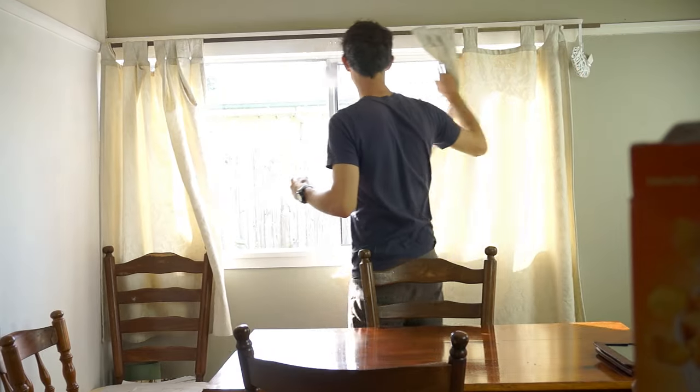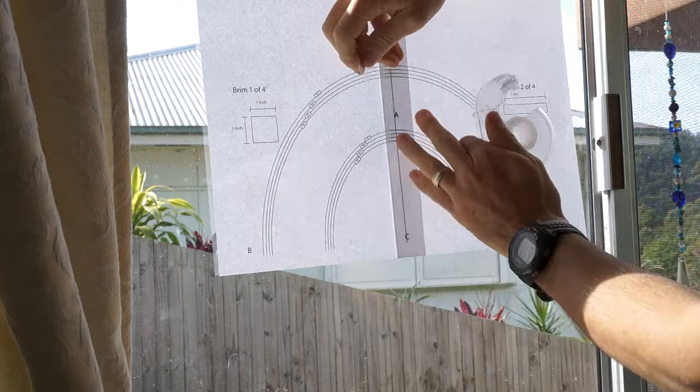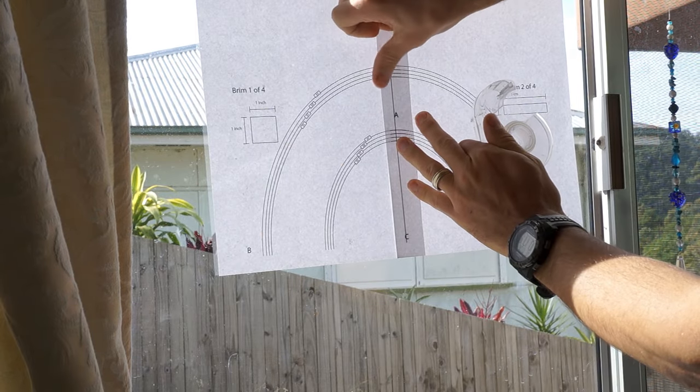Alright, print out the pattern. Line the pages up where they overlap and tape them together. I like to do this on my kitchen window for better visibility.